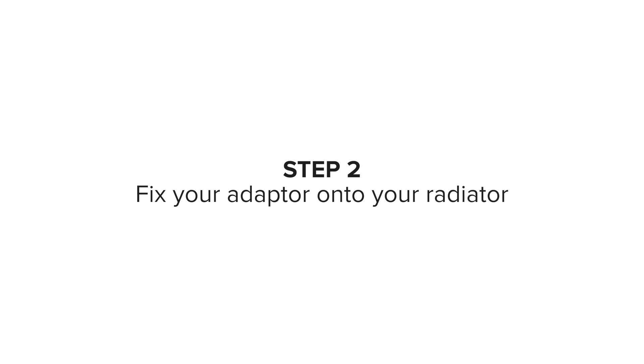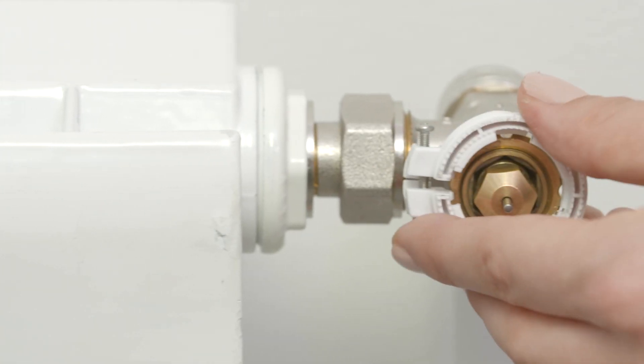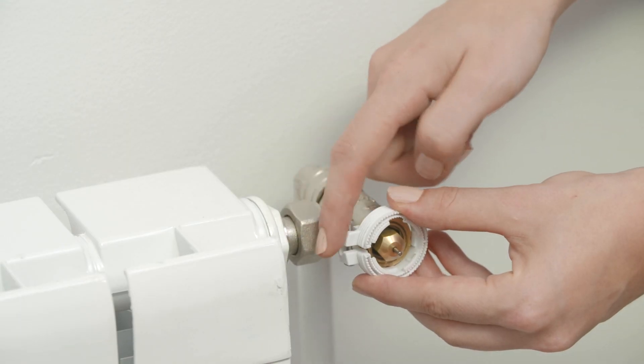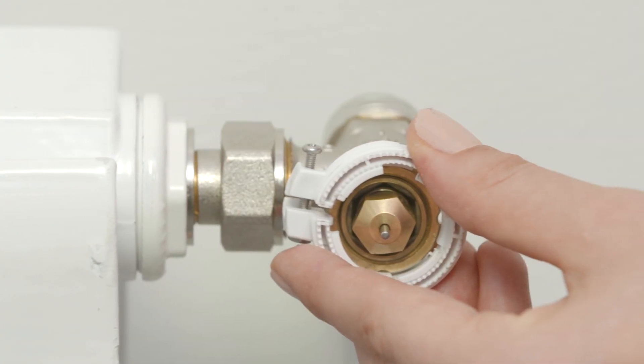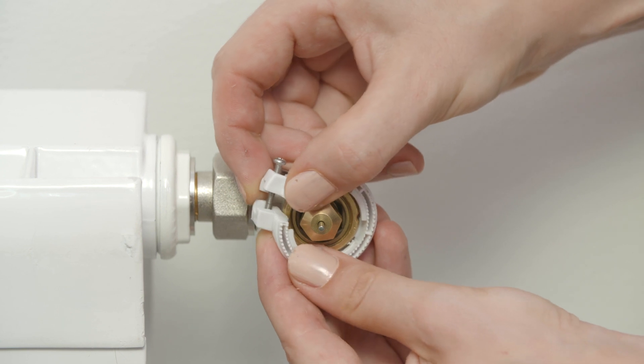Step two, fix your adapter onto your radiator. To clip your adapter onto your radiator, ensure the side with the screw is closest to the radiator. Pull open the adapter and close it over the valve body.